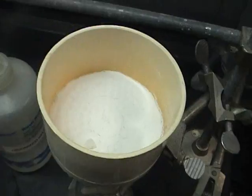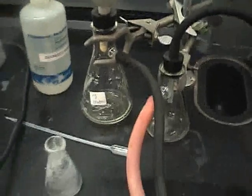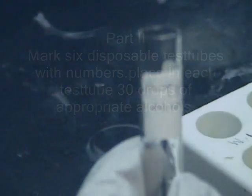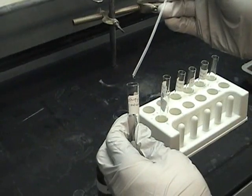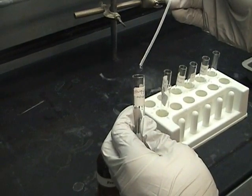Once you collect the crude product, weigh the crystals and then recrystallize from ethyl acetate. For the ester preparation, use test tubes 1 through 6, which correspond to different alcohols. In each test tube, place 30 drops of the appropriate alcohol.